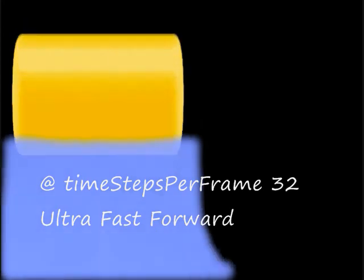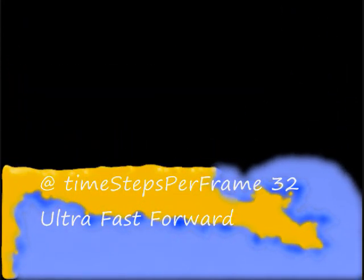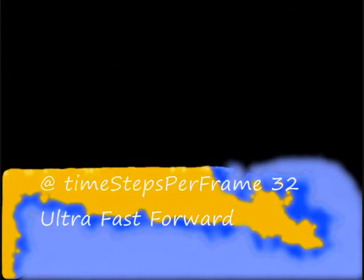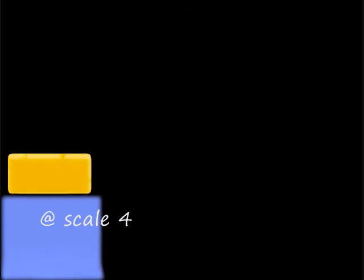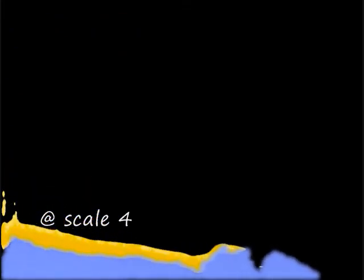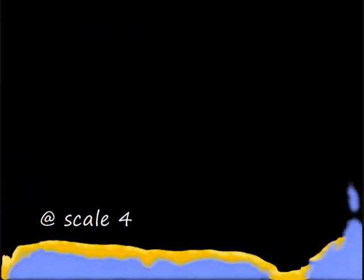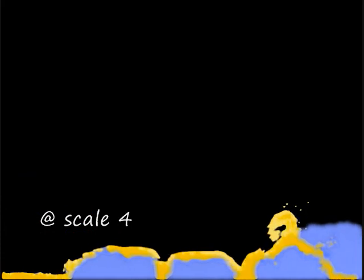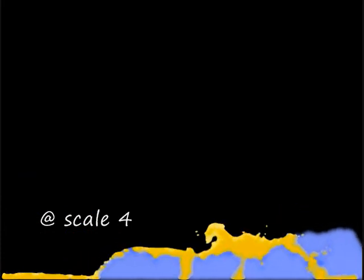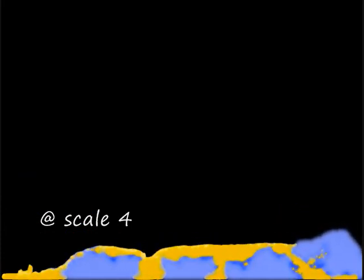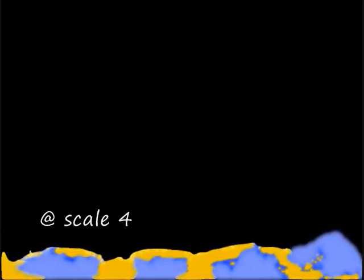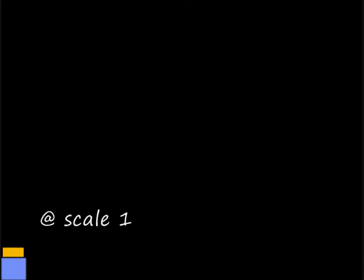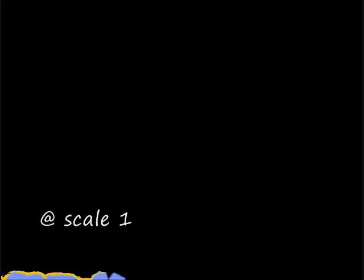And of course you can increase the time steps for fast forward. Here's the scale variable. This is scale 4, which is basically half the size of 8. Now it doesn't actually change the size — it changes the way it's visually represented. At scale 1, every particle takes up 1 pixel; otherwise every particle takes up 8 pixels.